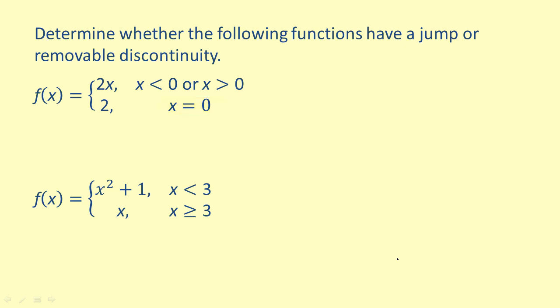Let's begin by looking at the left and right hand limits. First, we'll find the left hand limit. The limit of f(x) as x approaches 0 from the left is the limit of 2x as x approaches 0 from the left. Evaluating by using direct substitution, we find that the limit is equal to 0.